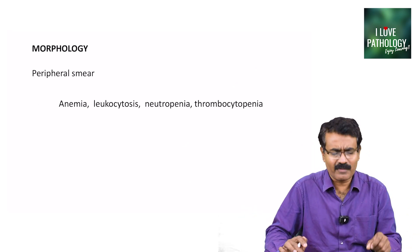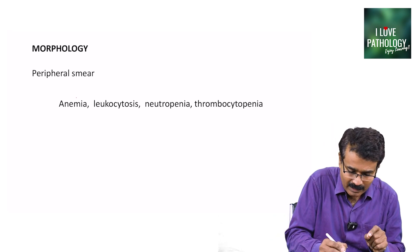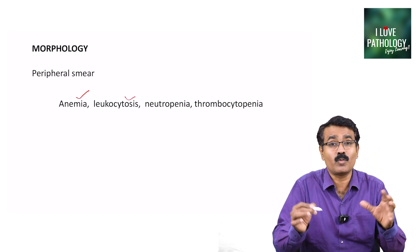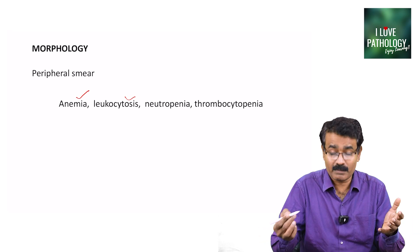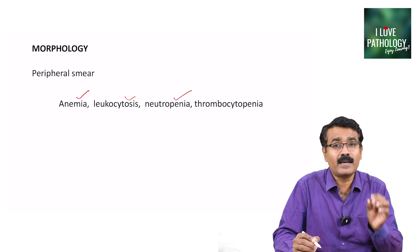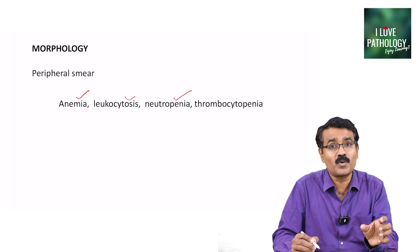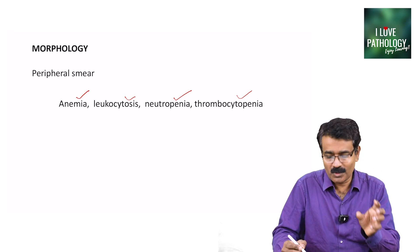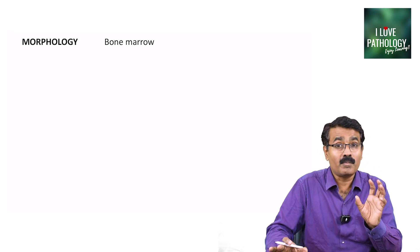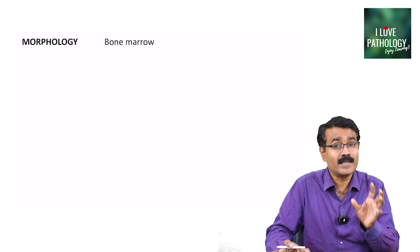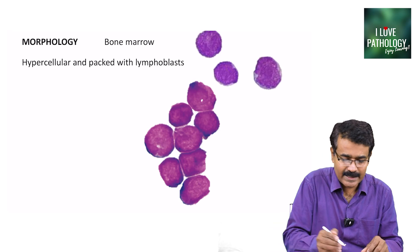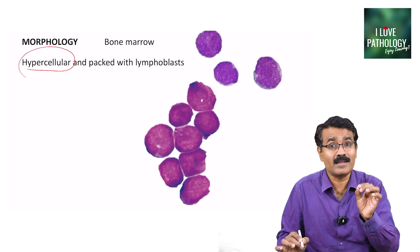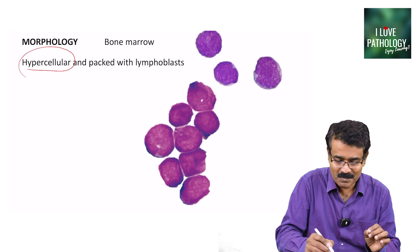Morphologically, in the peripheral smear you will see anemia, leukocytosis with most cells being premature, decreased neutrophils — that's neutropenia — and decreased platelet count — thrombocytopenia. In the bone marrow, what you see is a hypercellular marrow packed with lymphoblasts.